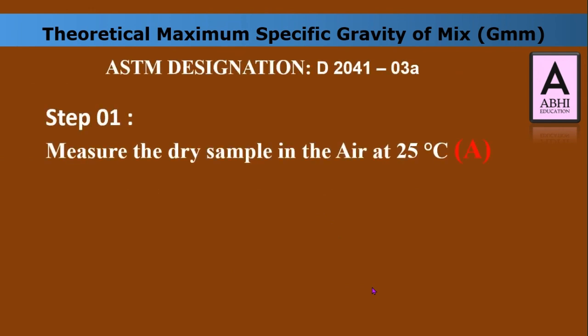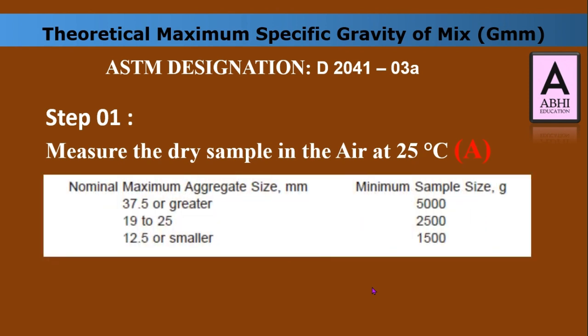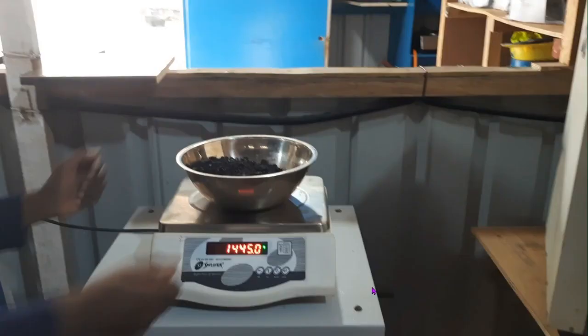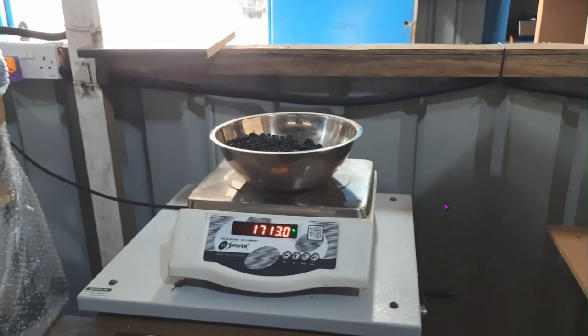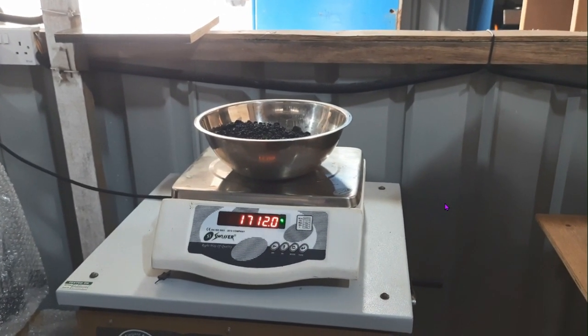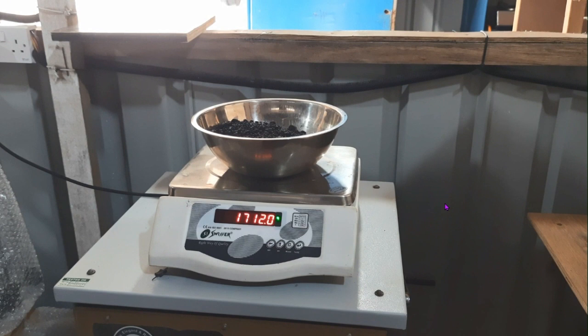Step one: measure the dry sample in air at 25 degrees Celsius — we take this as weight A. The sample size depends on the nominal maximum aggregate size. In this example, the sample weight is 1712 grams.